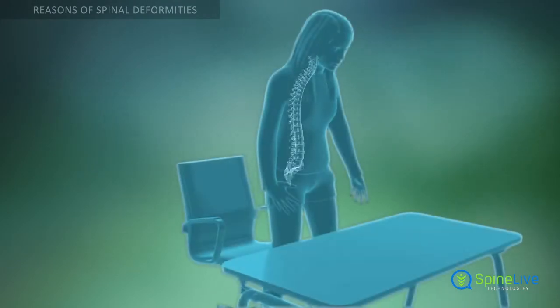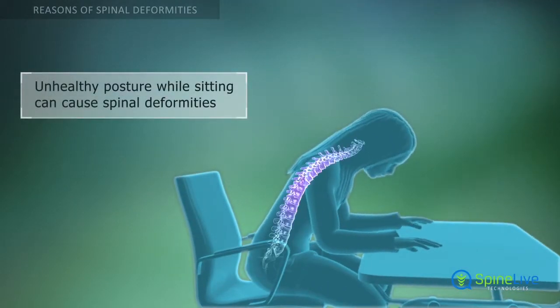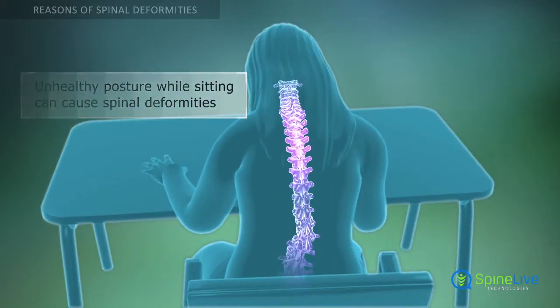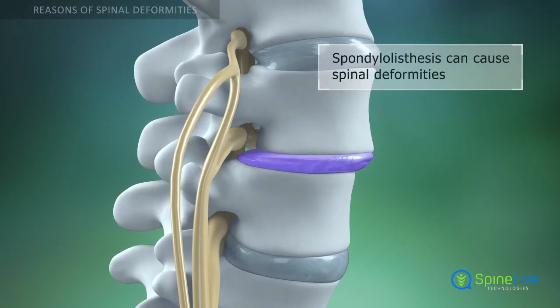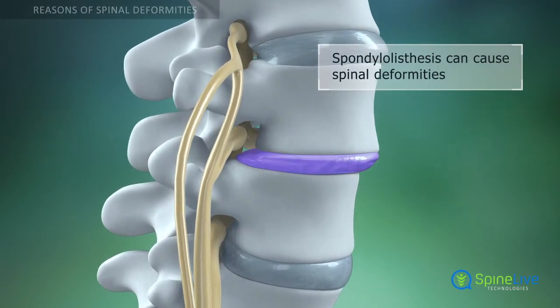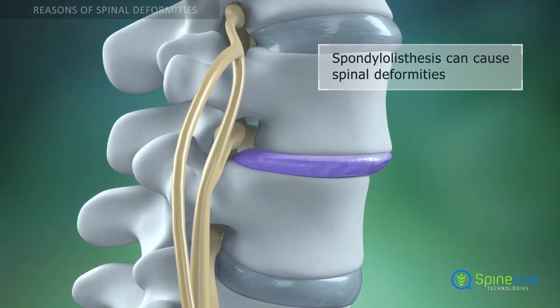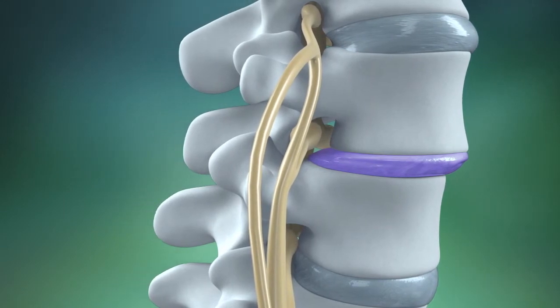Sometimes spinal deformities can occur in children or teenagers due to bad posture while sitting. Spondylolisthesis is a pathological condition that occurs when one of the vertebrae slips forward. It can cause deformities in various regions of the spine.